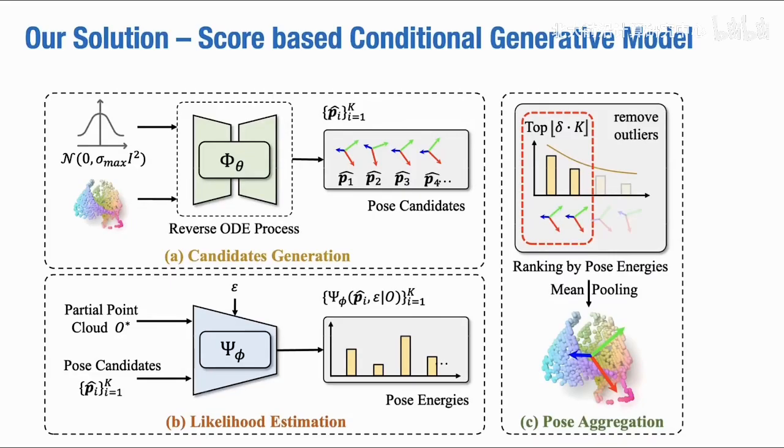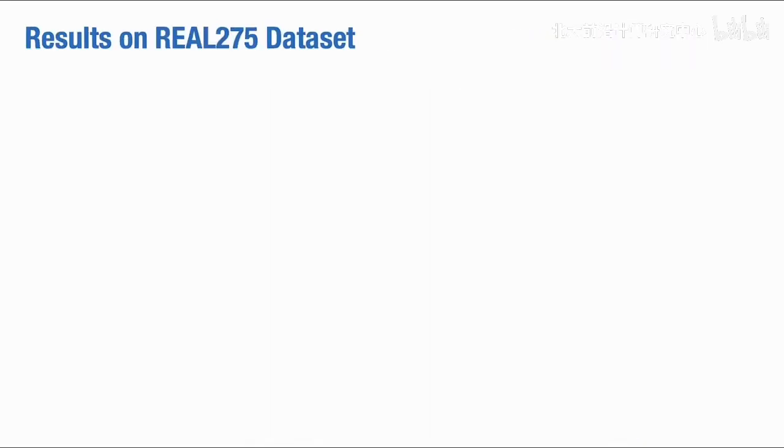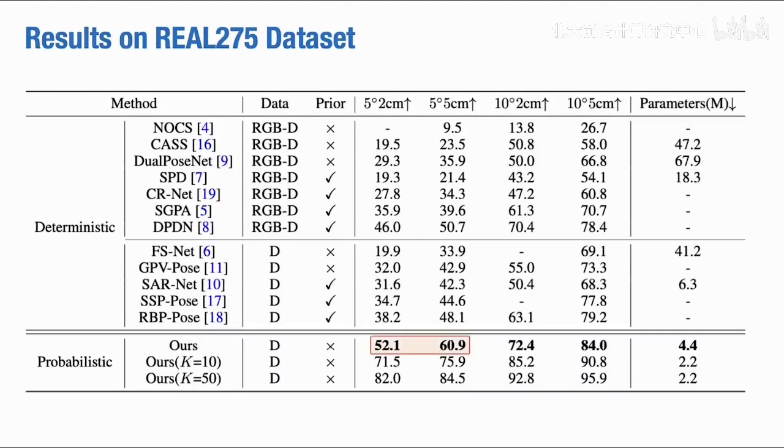The remaining candidates are aggregated into the final output by mean pooling. Our method achieves state-of-the-art performance on REAL275 dataset and outperforms previous methods significantly.